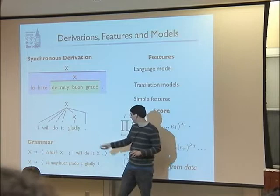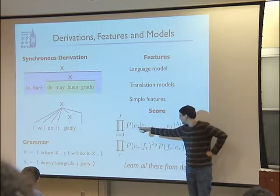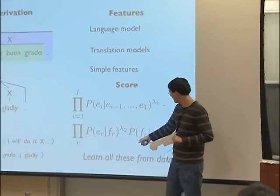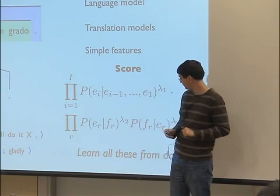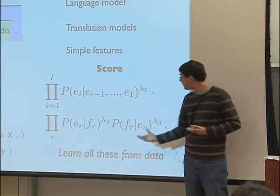The way we assign a score is to pick out different pieces of the synchronous derivation and score those. The language model scores the string of output words by asking: what's the probability that 'I' starts the sentence? What's the probability that 'will' follows 'I'? What's the probability that 'do' follows 'I will'? In a linear chain sense. The translation model weights the rules themselves, asking for all the different ways I could translate 'de muy buen grado' — what's the probability I'll use 'gladly' instead of 'happily' or instead of 'the dog'?